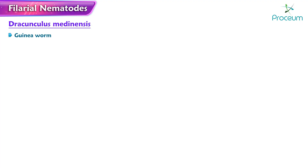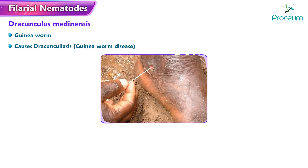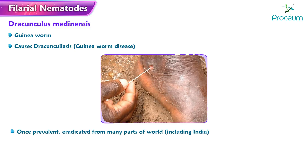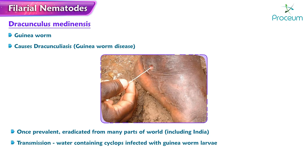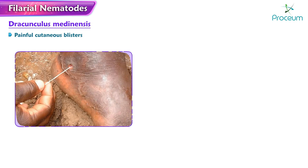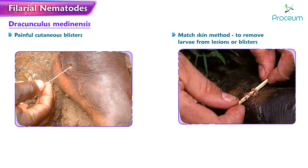Dracunculus medinensis is also called guinea worm and causes dracunculiasis, or guinea worm disease. Once prevalent, it has now been eradicated from many parts of the world, including India. Humans get infected when they drink water containing cyclops infected with guinea worm larvae. It produces painful cutaneous blisters, and the matched stick method was used to remove the worm from lesions or blisters.